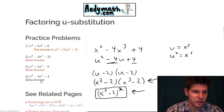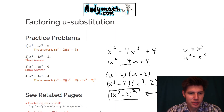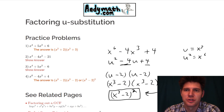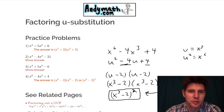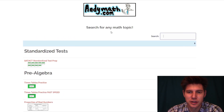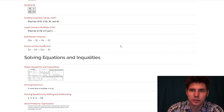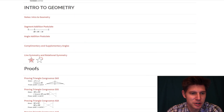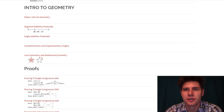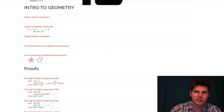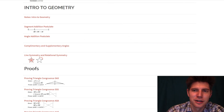And we can check the answer — yep, both answers are listed here. So if this makes sense, this is how to factor trinomials using u-substitution. Feel free to check out andymath.com for anything else you're trying to learn. It's got all kinds of topics with questions and answers and notes. Please like and subscribe. I'll talk to you guys later. Bye.